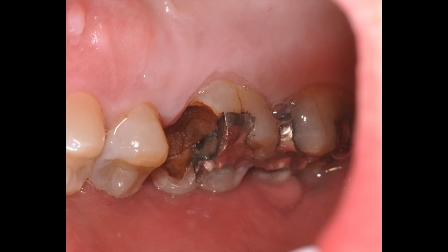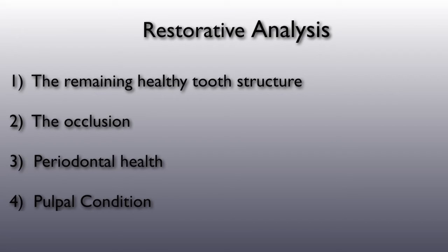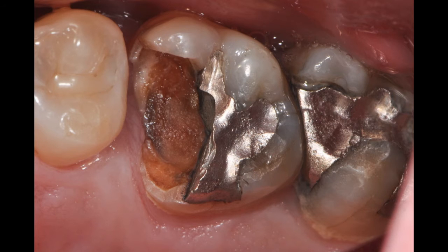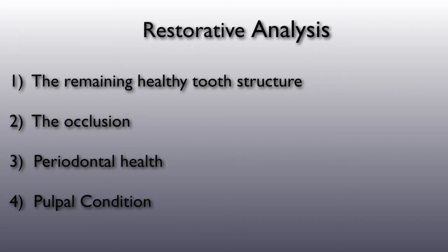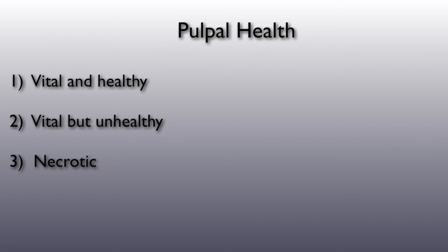In this case study we will be looking at tooth number three, which exhibits extensive decay. There are four basic criteria in our restorative analysis. First, we will estimate the remaining healthy tooth structure available for adhesive bonding. Next, we check the occlusion to determine forces on the future restoration and whether opposing occlusal surfaces require correction. An evaluation of periodontal health determines if the tooth warrants restoration and where restorative margins can be placed in relation to the periodontal attachment. Lastly, it is critical to understand the pulpal condition.